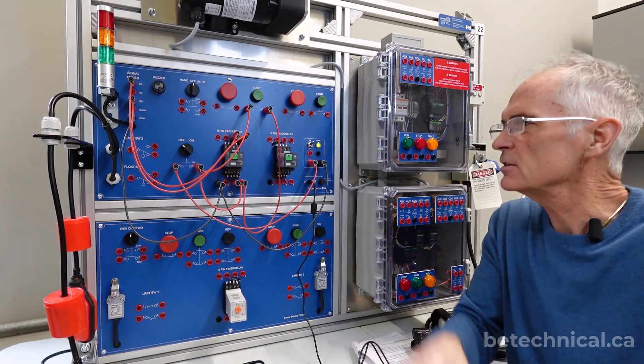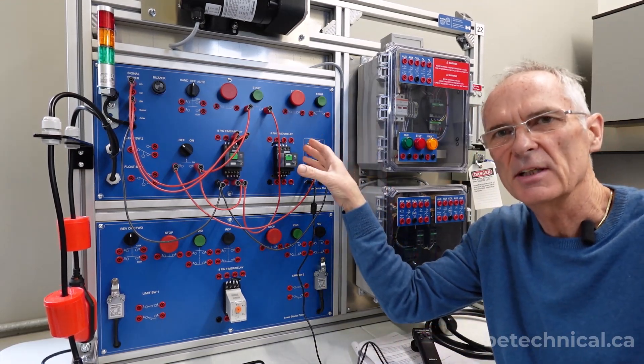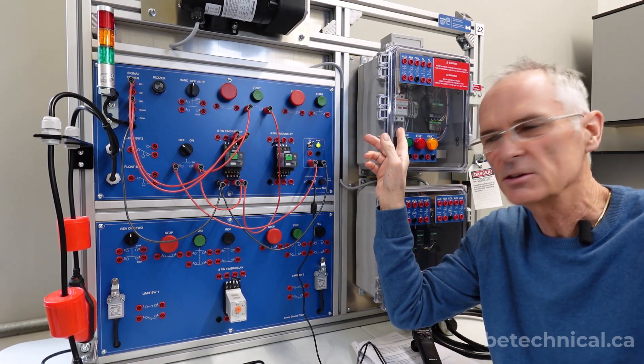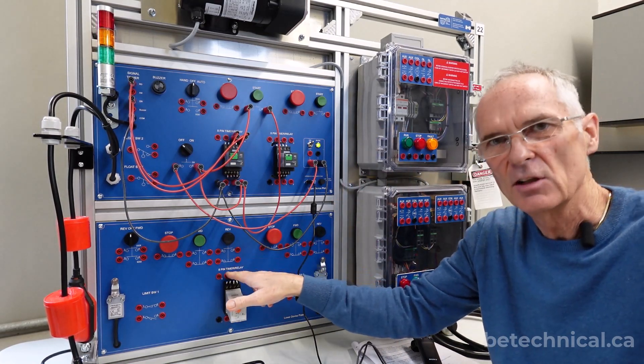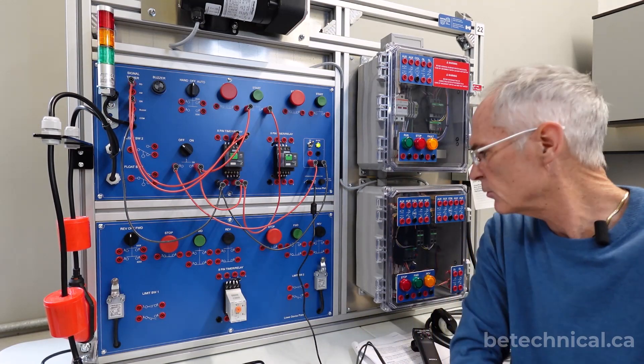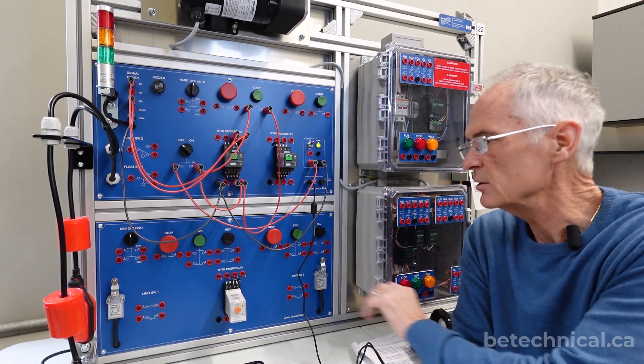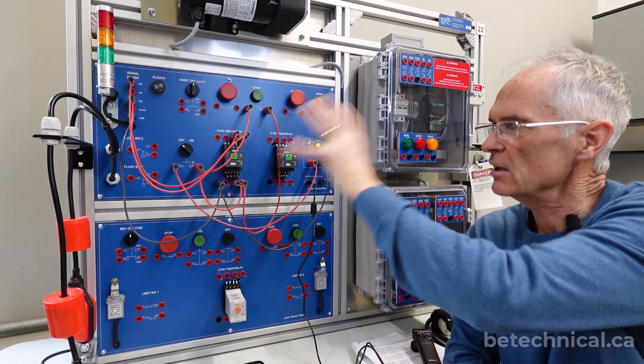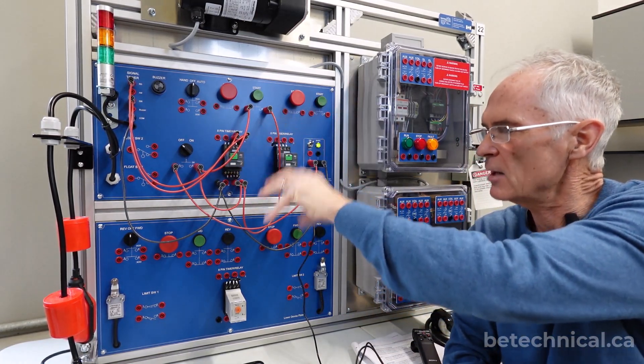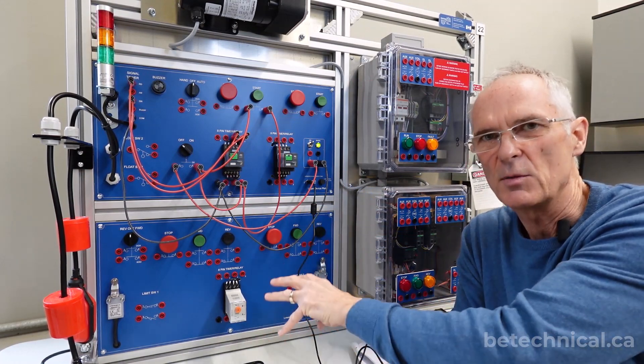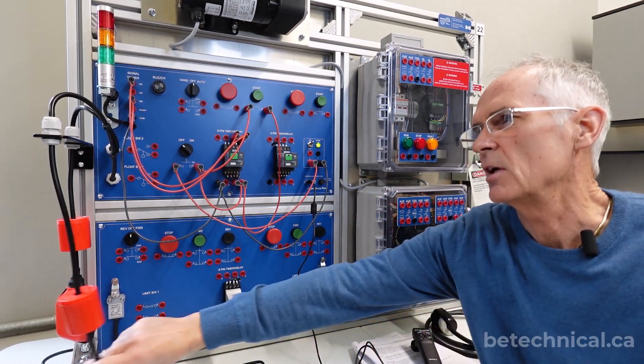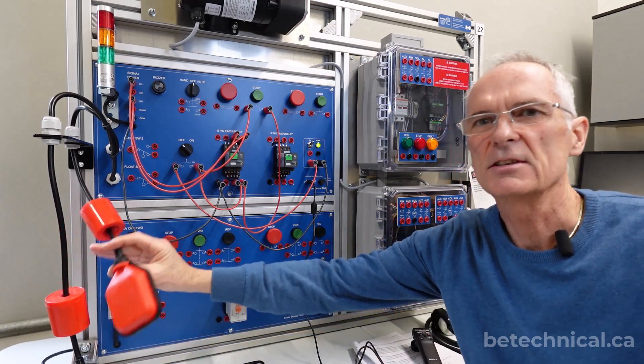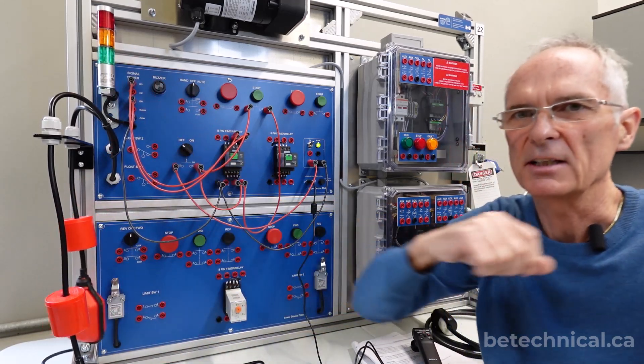The low voltage control section consists of an upper device plate which lines up with a non-reversing motor starter enclosure and a lower device plate which lines up with a reversing motor starter enclosure. Basically the devices are such that we have our non-reversing devices typically on the top and reversing on the bottom. For example, our float switches are on the top plate because typically we don't reverse a pump, we only control it in one direction.